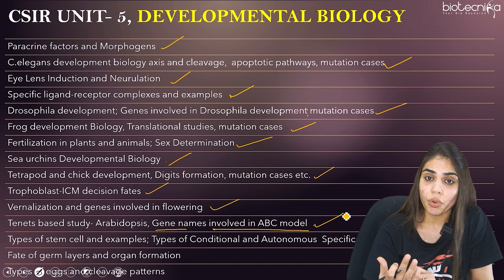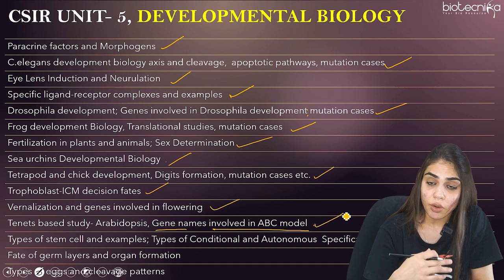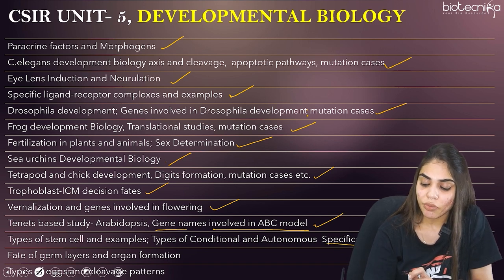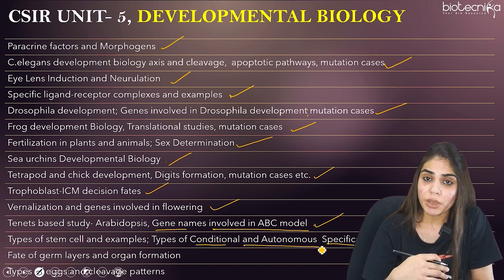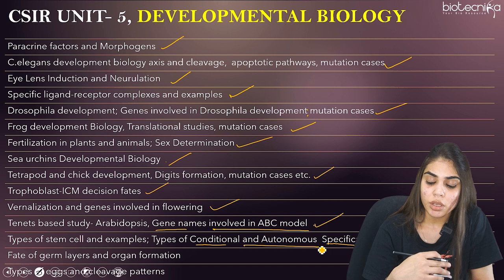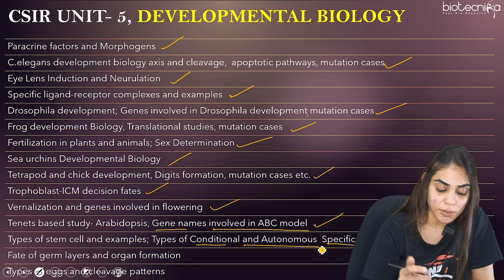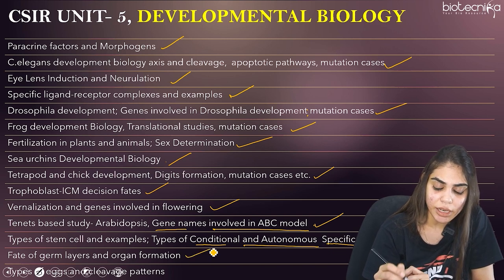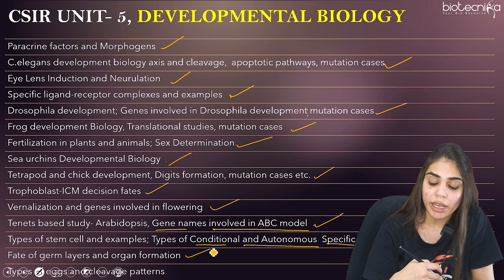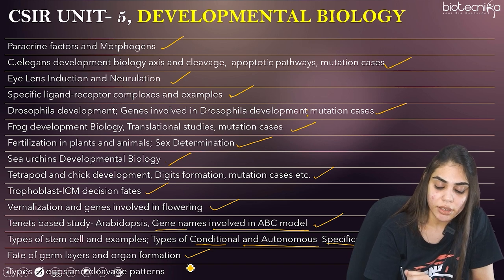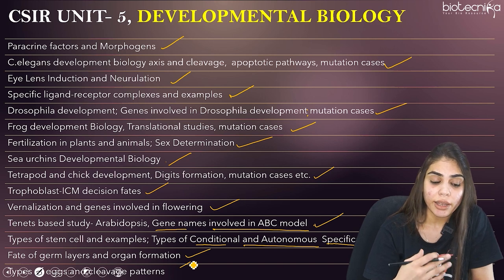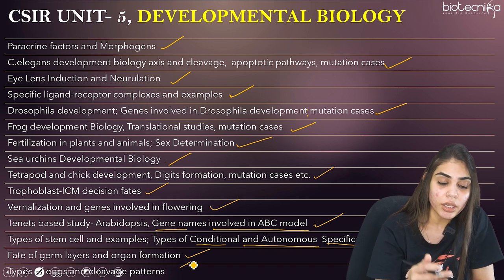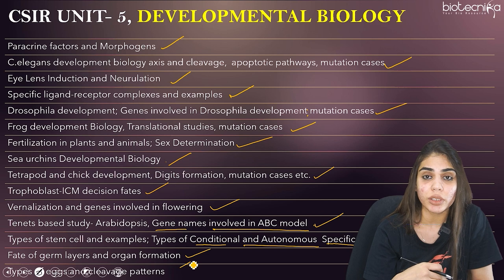Also learn types of stem cells — the four or five different types and their examples — and the difference between conditional and autonomous specification, why cytoplasmic determinants are needed for autonomous specification, and why conditional specification relies on morphogens. Finally, cover fate of germ layers, organ formation, and cleavage patterns in sea urchins, Drosophila, frog, and other model organisms.